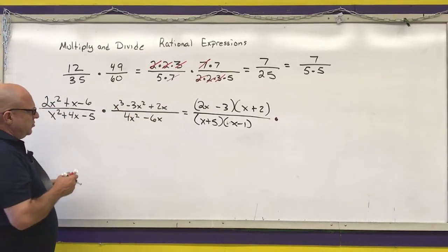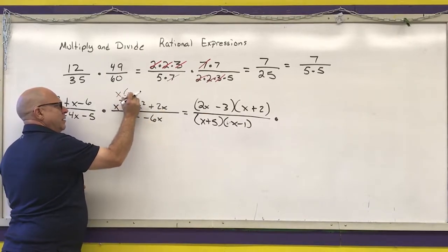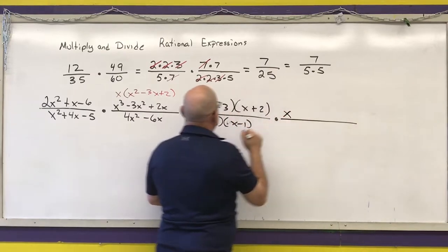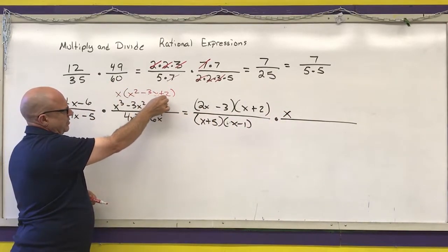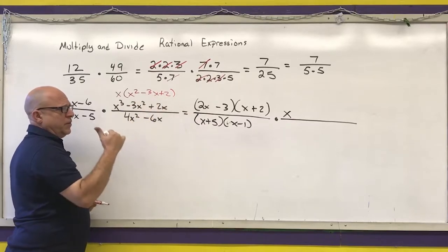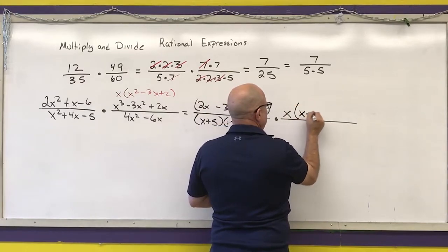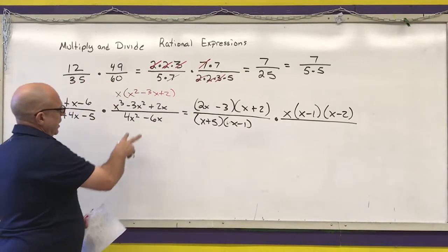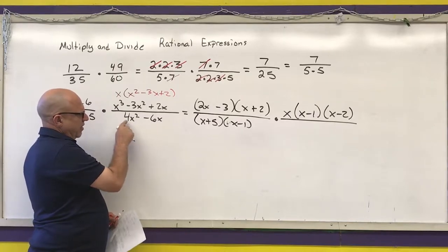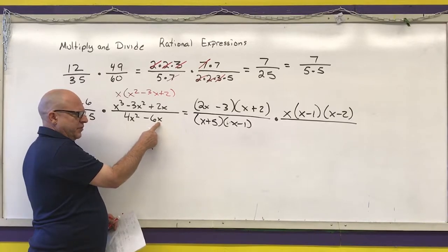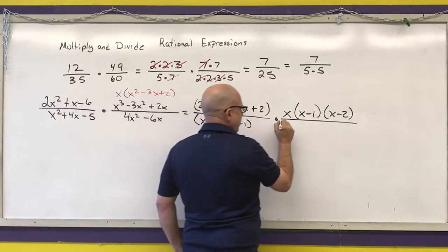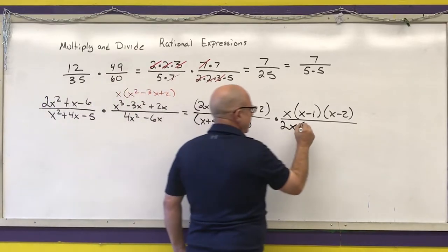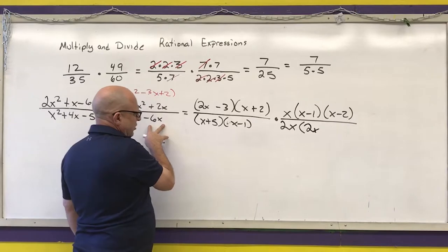For the second fraction, I first pull out the common factor of x from the numerator, leaving x(x² - 3x + 2). Then I factor that quadratic: two numbers that multiply to two and add to negative three are negative one and negative two, giving x(x - 1)(x - 2). For the denominator, I pull out the greatest common factor of 2x from 4x² - 6x, giving 2x(2x - 3).